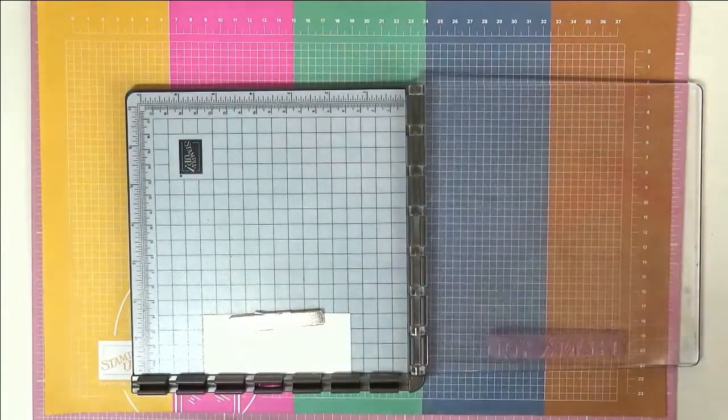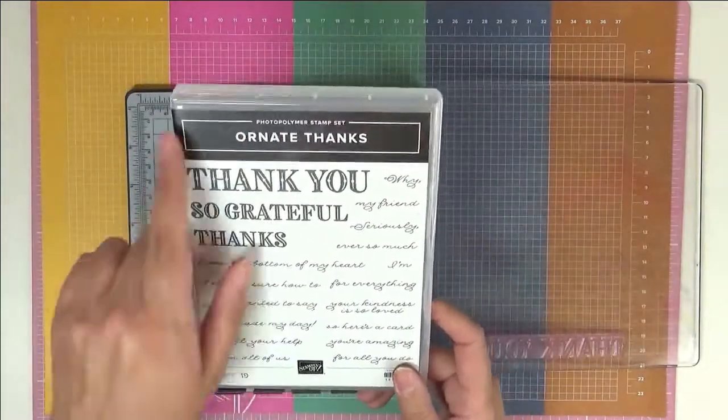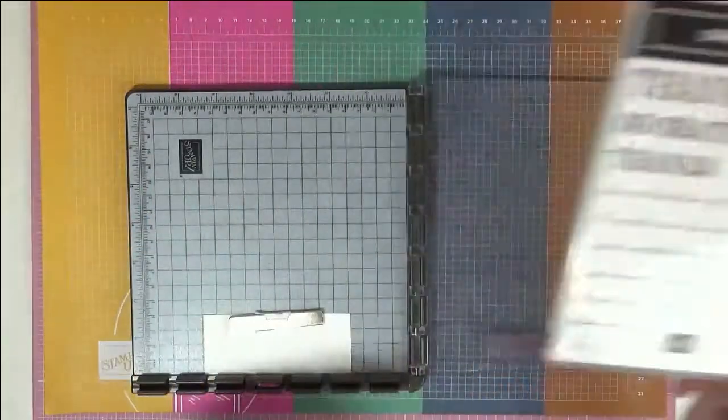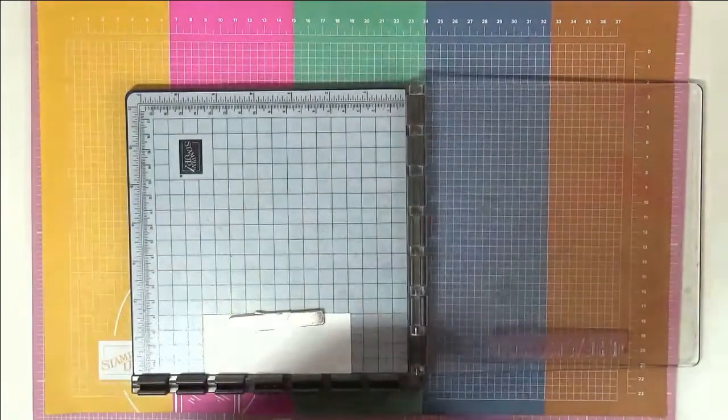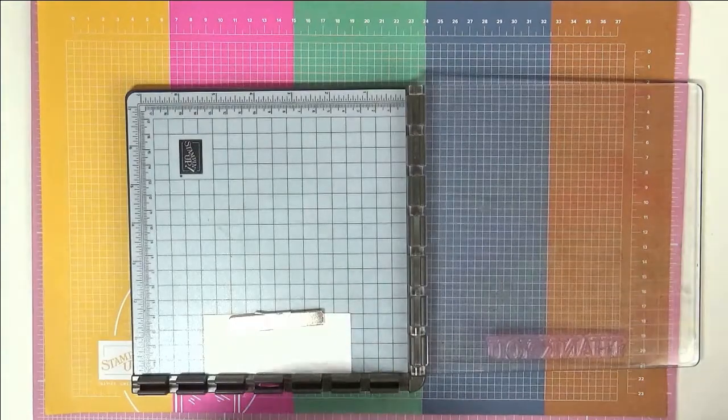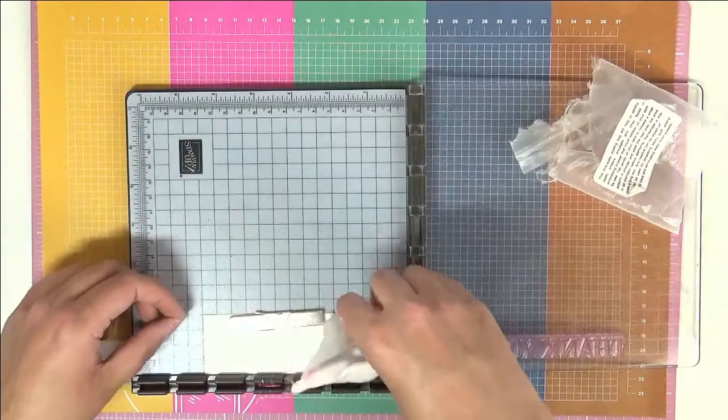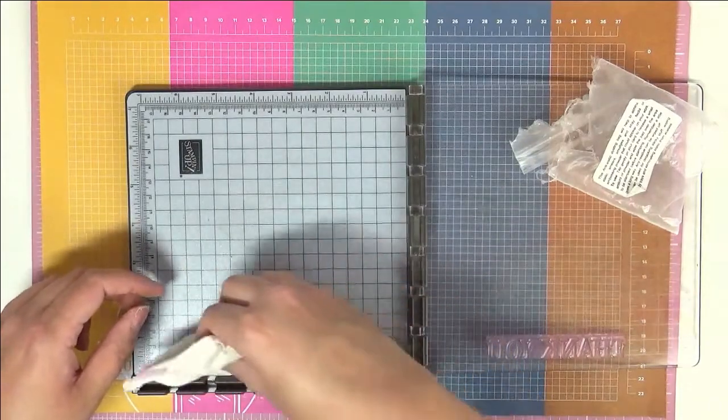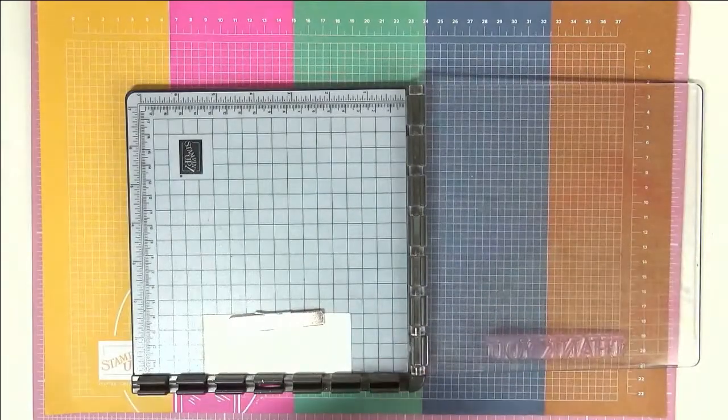I have everything set up in my Stampin' Up! Artist and the first stamp set I'm going to be using is this one called Ornate Thanks and I'm going to be using the thank you. So we're going to stamp in VersaMark ink but first I've just remembered we need to use my embossing buddy across the slot so that we don't get powder anywhere we don't want it.